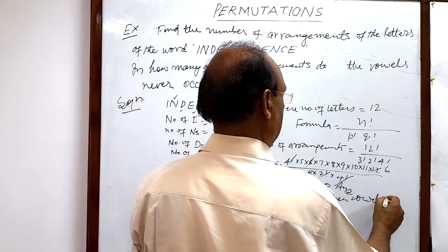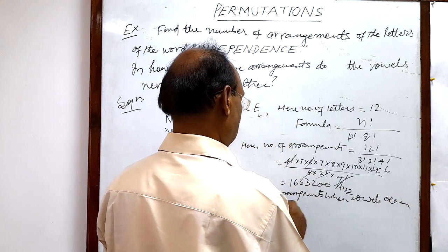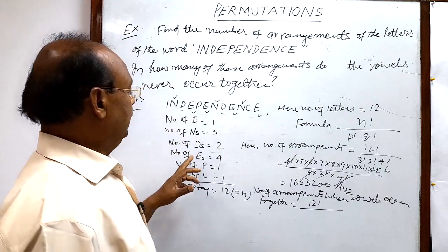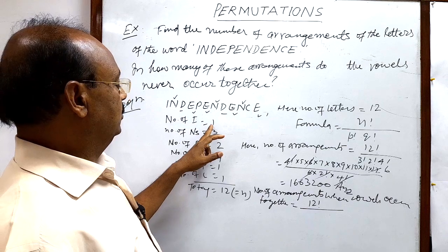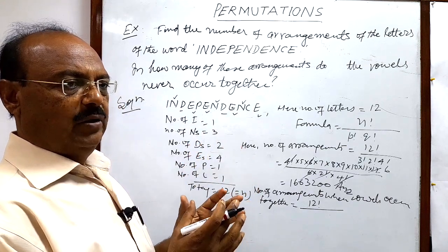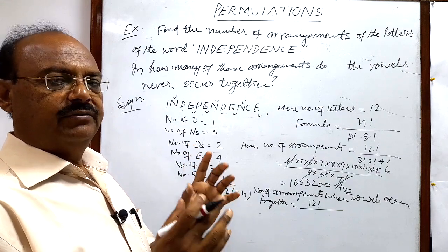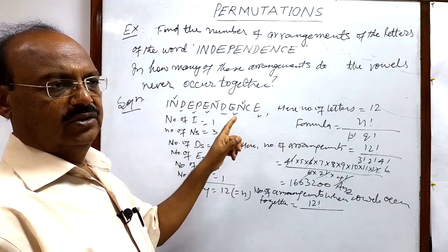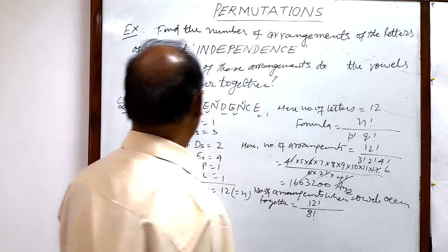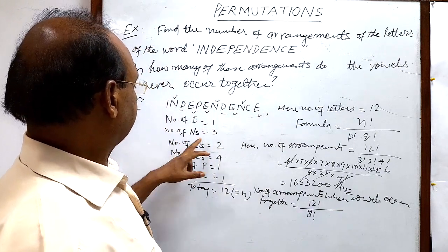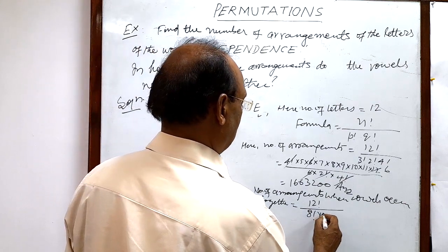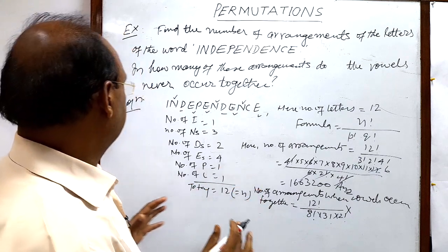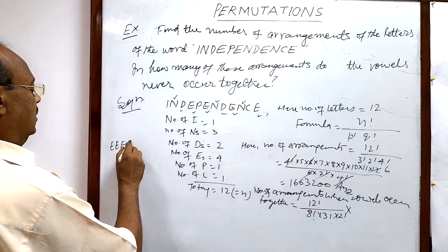Number of arrangements when vowels occur together: total letters is twelve, but we have five vowels — four E's and one I. This group of five vowels is treated as a single object. So we have seven remaining letters plus one group, giving eight objects. The arrangements are eight factorial divided by three factorial for the three N's, times two factorial for the two D's.